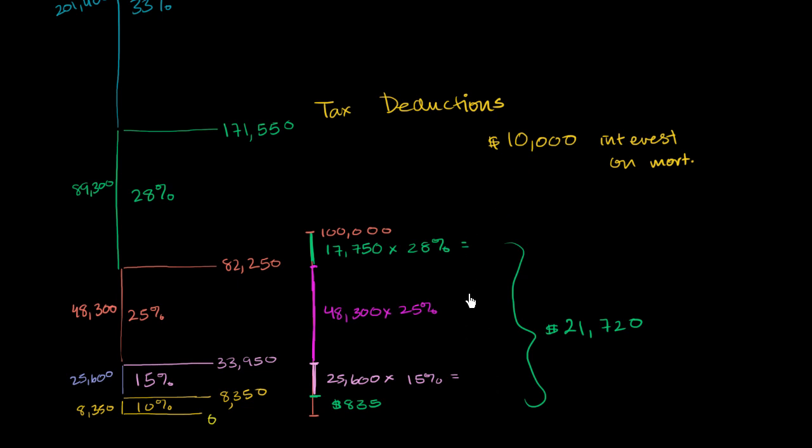we showed this scenario where this person making $100,000 would have to pay $21,720 in taxes. And so based on that misconception, they would say, OK, I get a $10,000 tax deduction. Now I would pay $11,720. And that is wrong.